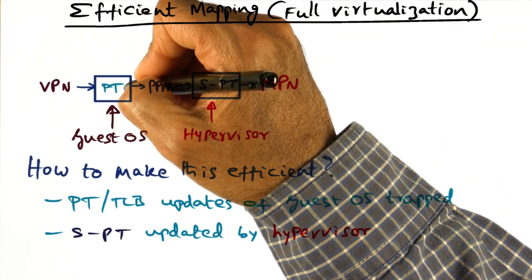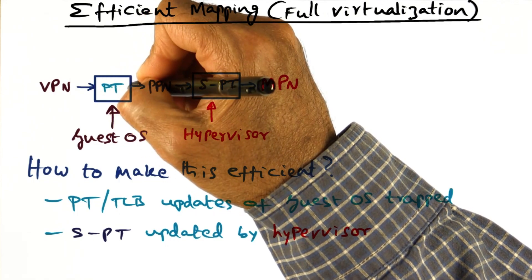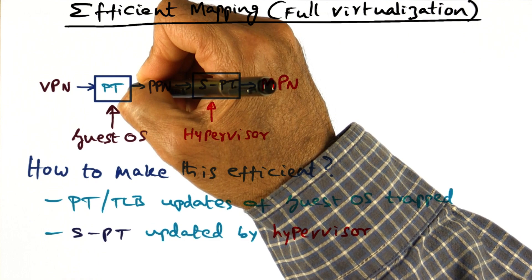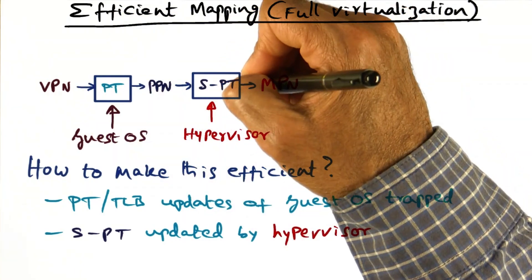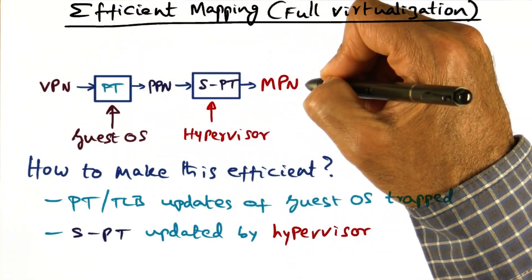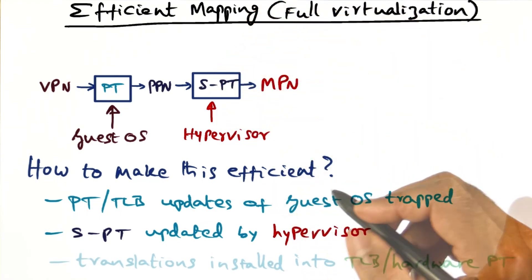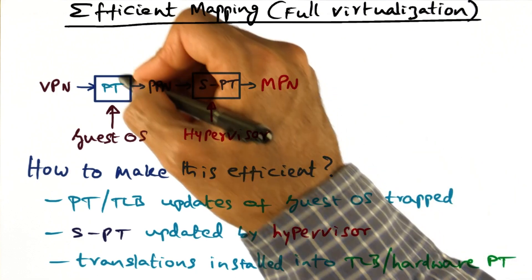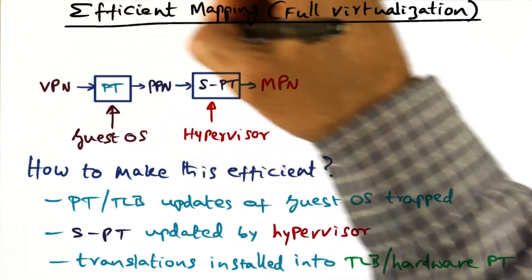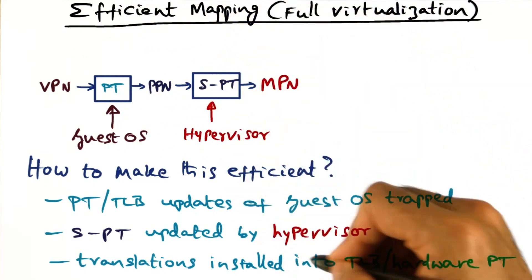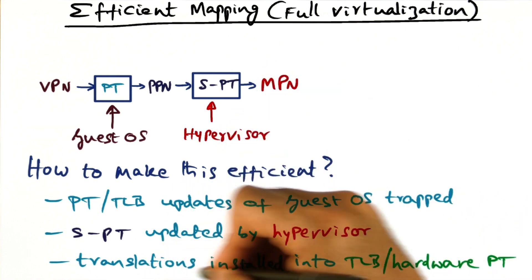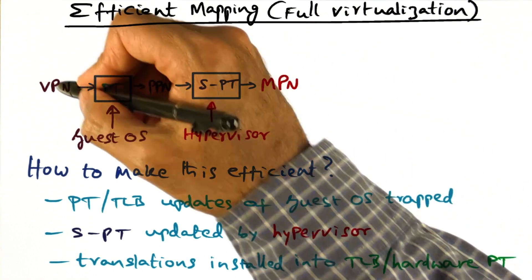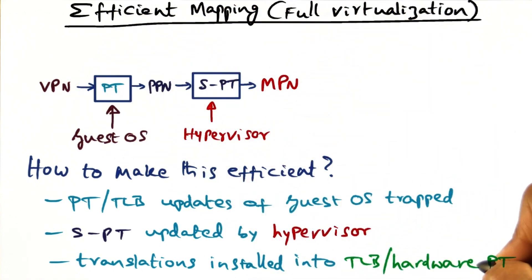The update that the guest OS is making to its page table data structure — which it thinks is the real thing — is not the real thing. The hypervisor is updating the same mapping by saying this particular VPN is going to this machine page number; that's the one that we're going to put as the entry. So as a result, even though there is a level of indirection, the real translation — the mapping between VPN and MPN — is remembered in the shadow page table, which may be the hardware page table if the processor is using it for address translation, or it could be the TLB. In either case, the hypervisor is going to install the translation from VPN to MPN into the TLB and the hardware page table.